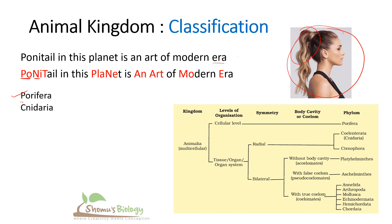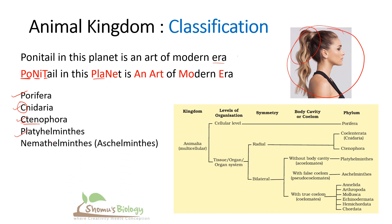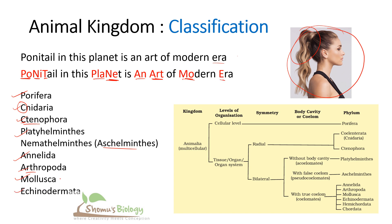Using 'Ponytail in this planet is an art of modern era,' you can recall all invertebrate phylums. P-O gives Porifera; N-I gives Cnidaria (homophonic sound); T gives Ctenophora (also starts with C, homophonic T); PLA gives Platyhelminthes; N gives Nemathelminths (also known as Aschelminths); AN gives Annelida; ART gives Arthropoda; MO gives Mollusca; and E gives Echinodermata. That is the sequential order of all invertebrate phylums.